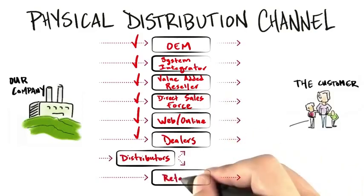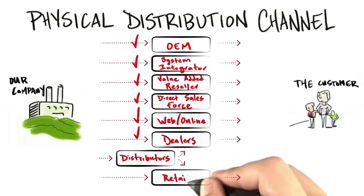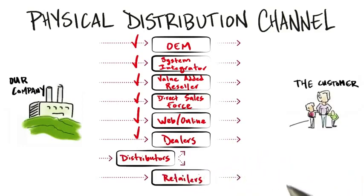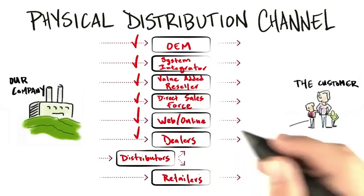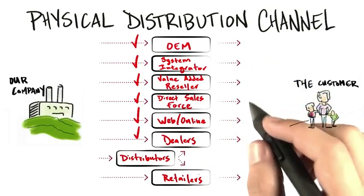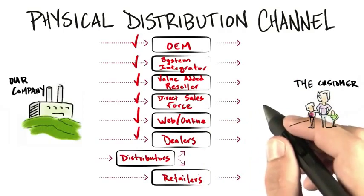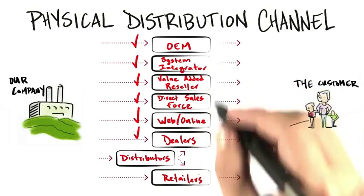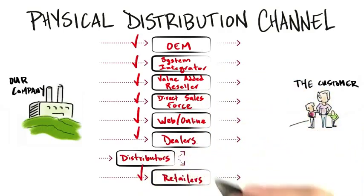Retailers are all about Main Street and talking to your customers. Another form of retailer are mass merchants — instead of small storefronts, they aggregate tens or hundreds of thousands of products under one roof. Retailers and mass merchants often, though not always, get their products supplied through distributors.